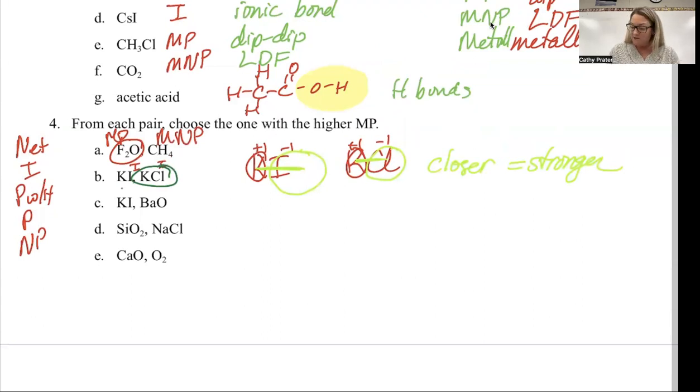For C, once again, I have two ionics. The first thing I'm going to look at is the charge. Plus one, minus one, plus two, minus two. Plus two and minus two is going to be more strongly attracted to each other than plus one and minus one are. Since charge lends me an explanation, I don't even look at the size of the ions.